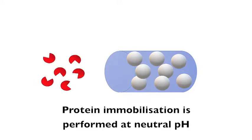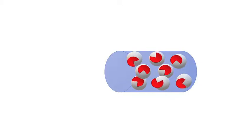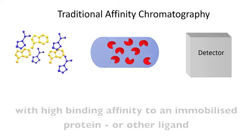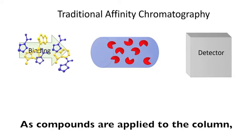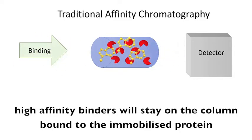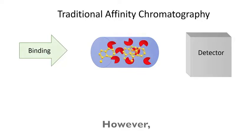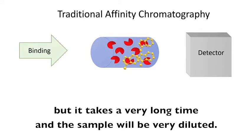Protein immobilization is performed at neutral pH into the pores of the silica particles. Traditional affinity chromatography is used to purify analytes with high binding affinity to an immobilized protein or other ligand. As compounds are applied to the column, high affinity binders will stay on the column bound to the immobilized protein while other compounds are eluted. However, high affinity binders do also elute from the column, but it takes a very long time and the sample will be very diluted.